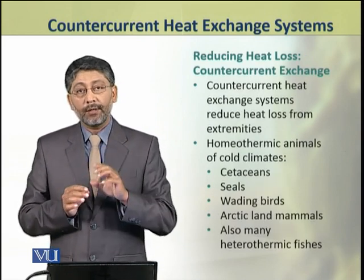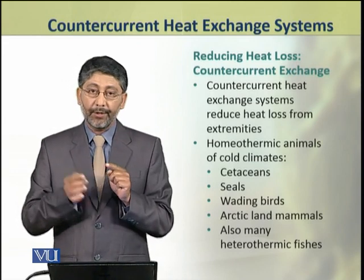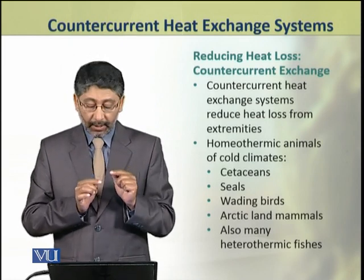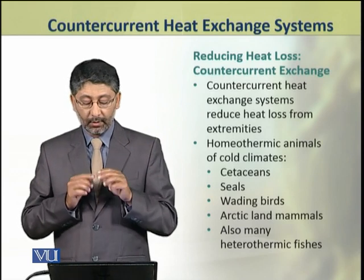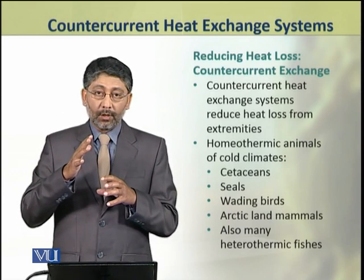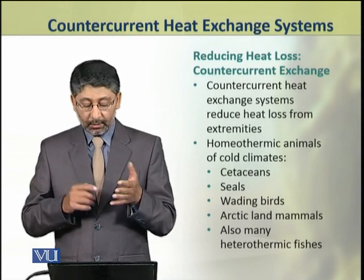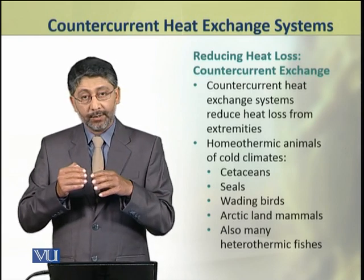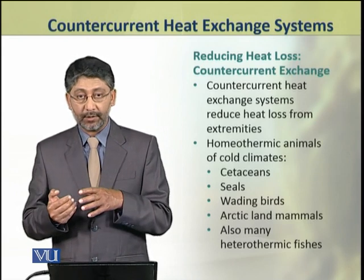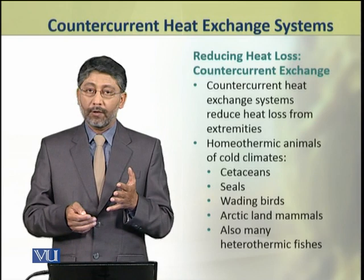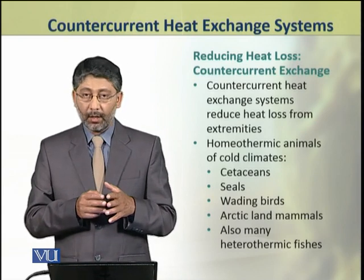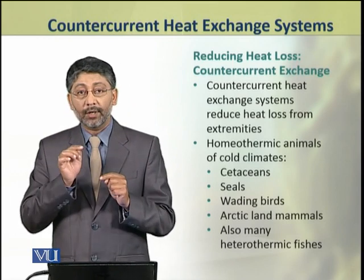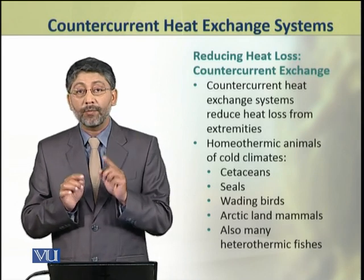The counter current heat exchange systems reduce the heat loss from these peripheral extremities and tissues. These counter current heat exchange systems are found in homeothermic animals of cold climates, like cetaceans — that is whales and dolphins — seals, wading birds, arctic land animals, and they are also contained by many heterothermic fishes.